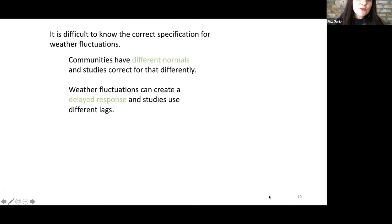We don't know the correct specification for weather fluctuations. In other words, we don't have social science theories to guide what kind of weather would create what kind of response. Furthermore, there's a lot of heterogeneity across communities. Communities may have different normals. For example, cold weather in Ithaca will mean something different than cold weather in California. So the normal temperature of a community really makes a difference, and studies correct for that differently. Some studies look at historical normals between 1960 and 1990. Some studies argue that we need to look at more recent periods from 1980 to 1990. That creates differences in the models and the results.